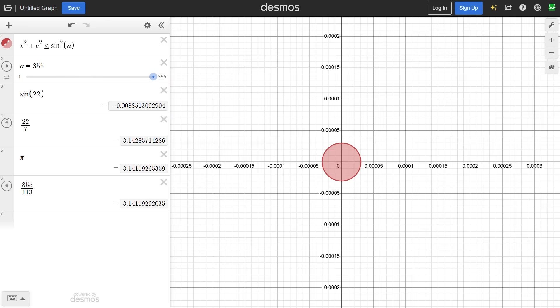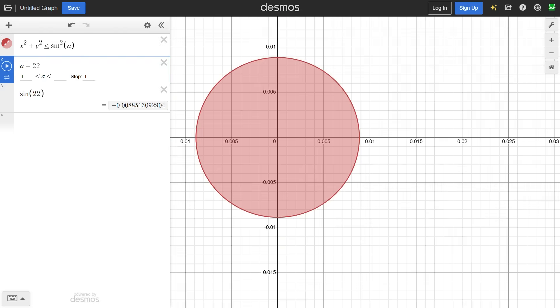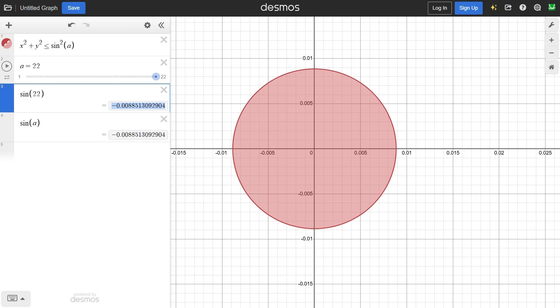The continued fraction approximations go from 22 over 7, to this, to 355 over 113, to this. Okay, I kind of went off on a tangent, but the point is, if a is the numerator of a pi approximation, then sine of a ends up being small. But this only works for the numerators, not the denominators.